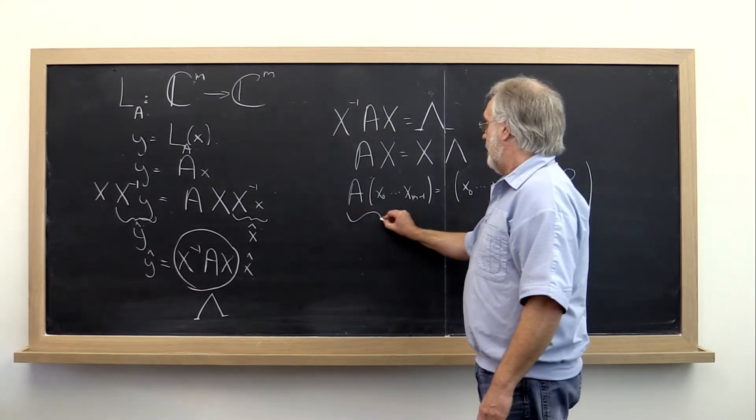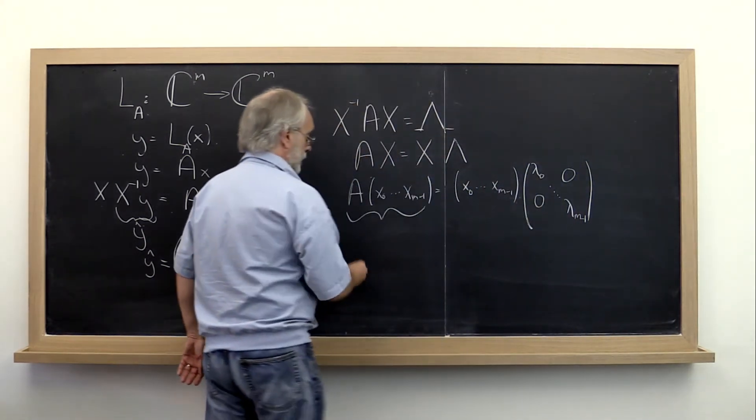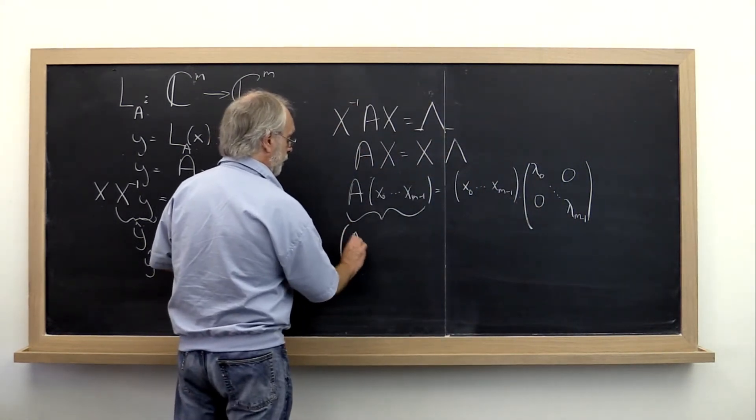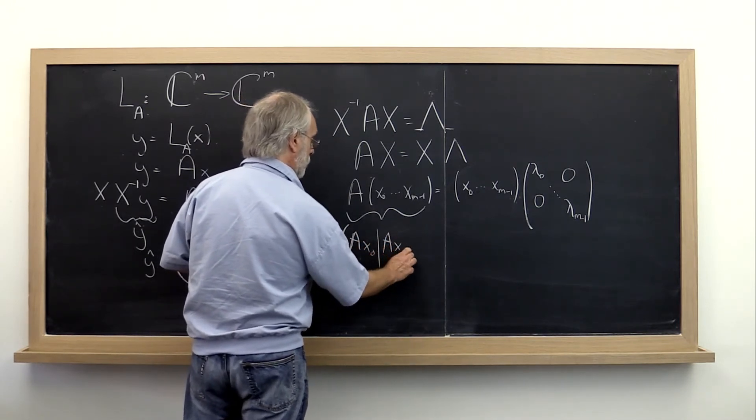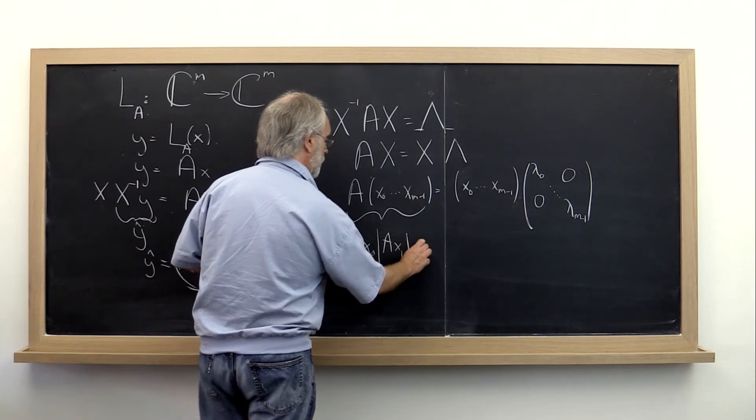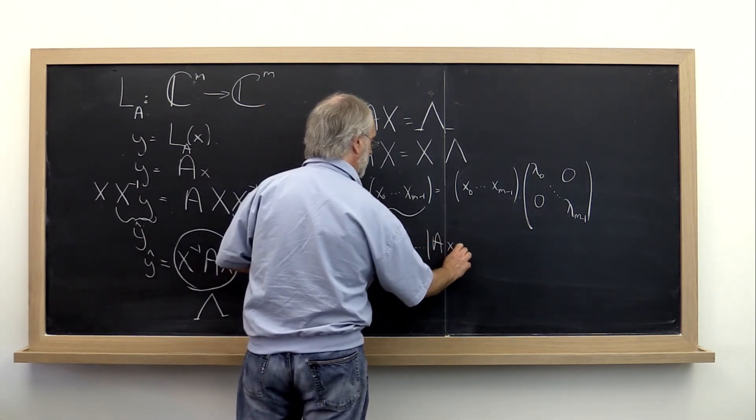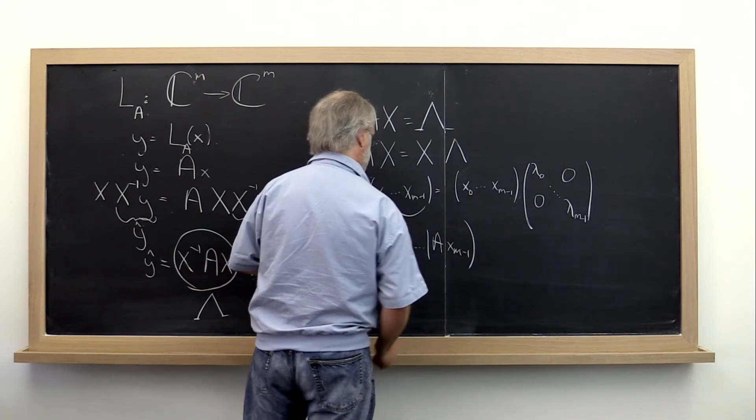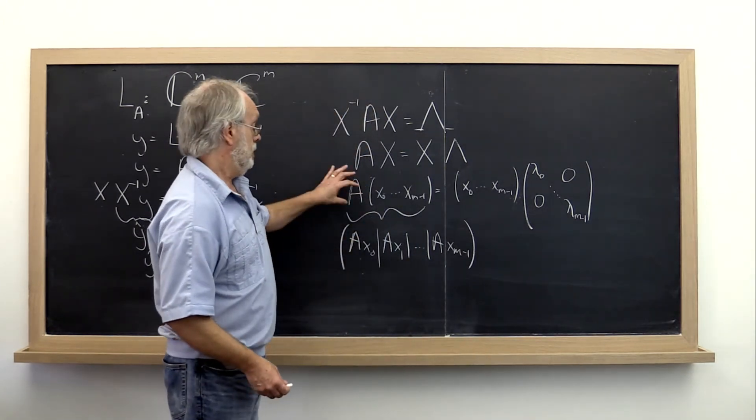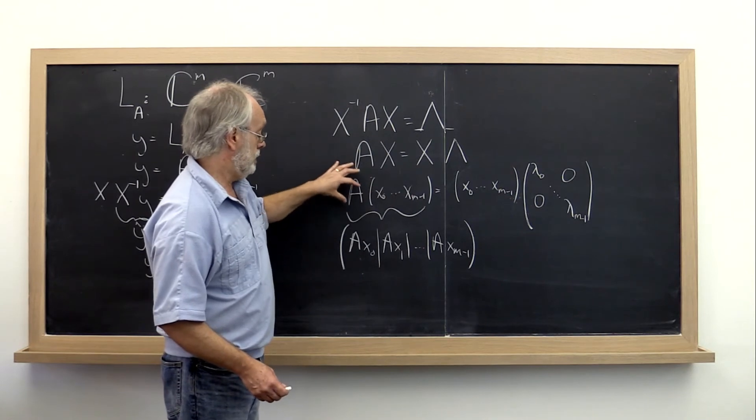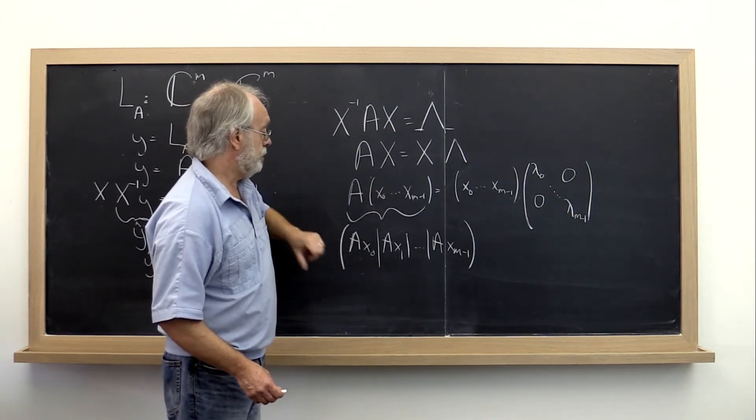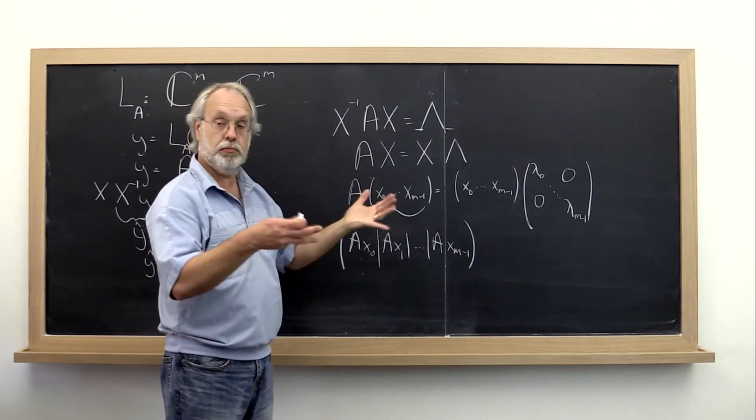This here on the left is just the matrix that consists of the first column, the second column, and so forth. Matrix times a matrix that's partitioned by columns. It's just that matrix times the first column, the second column, and so forth.